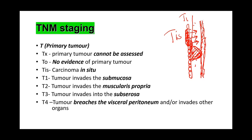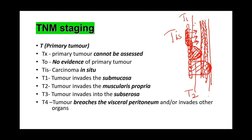The muscularis propria has two layers. T4 is when the tumor has breached the serosa, is now in the peritoneum, and will invade adjacent structures. That is the T-staging.